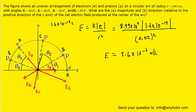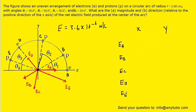What we have to do is break each of those electric fields into their x and y components. For the x component, we take the magnitude of the electric field and multiply it by the cosine of an angle. For the y component, it's the electric field multiplied by the sine of an angle. For the electric field produced by charge A, it points in the positive x direction, so that angle is simply zero degrees.